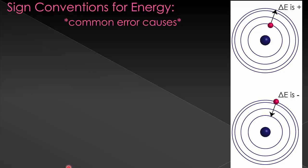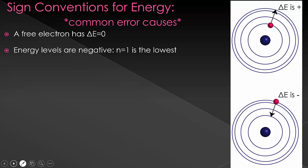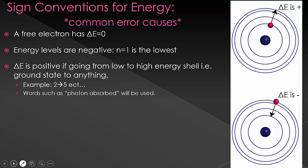Before I move on to the next problem, we need to talk about some common sign issues that come up. This is a major cause of people making errors when they do the problems. So a free electron has a delta E equals zero, and that's just sort of something you need to know, and it doesn't actually come up a lot in this class. Because energy values are negative, n equals one is the lowest. Now this makes a little bit of logical sense. If we were going to design the system, we would want n equals one to be our lowest energy. It's our closest to our nucleus. It fills with electrons first. That's logical. Now let's think about what this means for delta E though.